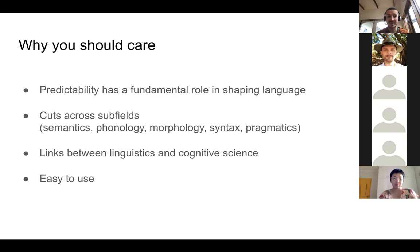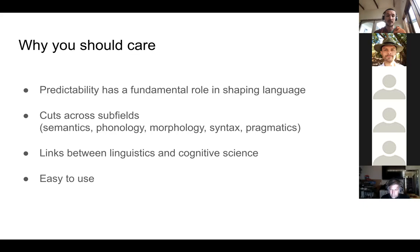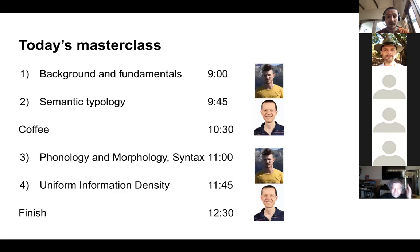Why should you care about this? Concepts of predictability and uncertainty seem to have a fundamental role in shaping human language. This approach cuts across the subfields of linguistics — it's applicable in semantics, phonology, morphology, syntax, and pragmatics — showing common currents across areas that are usually treated separately. The information-theoretic approach also ties into cognitive science and concepts about how the human mind works. And the maths involved is actually pretty simple, even accessible to non-mathematicians.